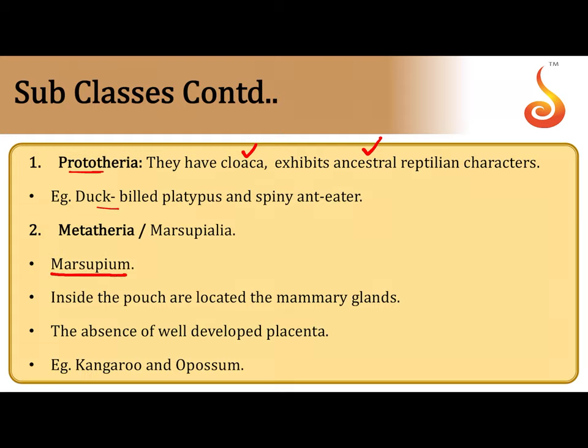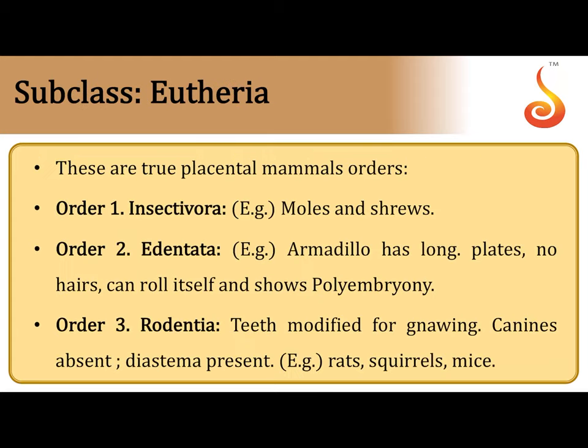Metatheria are also called Marsupialia because they have a pouch. These pouched mammals include kangaroos and opossums. Inside the pouch they have mammary glands. They have a poorly developed placenta, so the young one is born prematurely and jumps into the pouch, where the rest of development occurs.